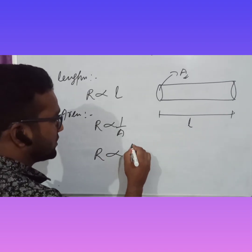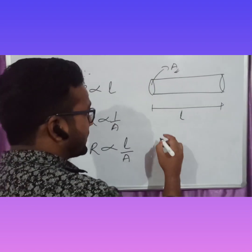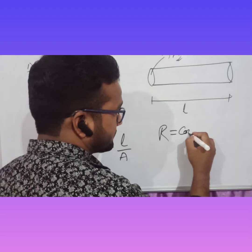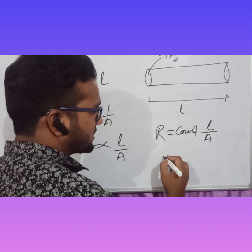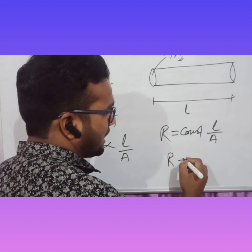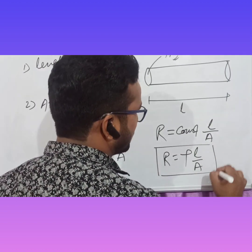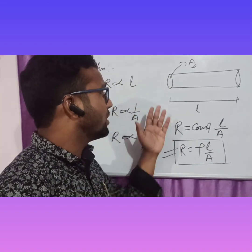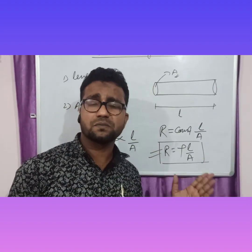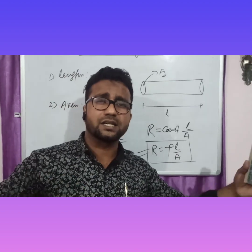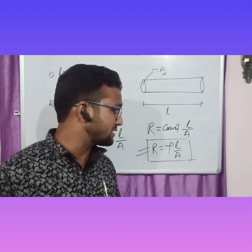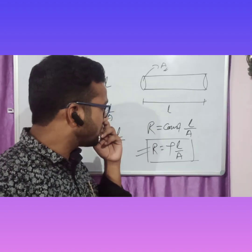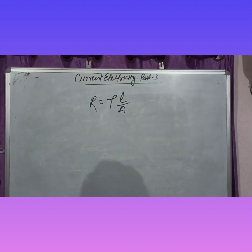When we combine these two laws, it will give R directly proportional to L by A. When we remove the proportionality sign, we put a constant, giving R equal to ρL/A. This is the final formula for resistance. From this formula we can see: when the length of the material increases, resistance increases, and when area increases, resistance decreases.